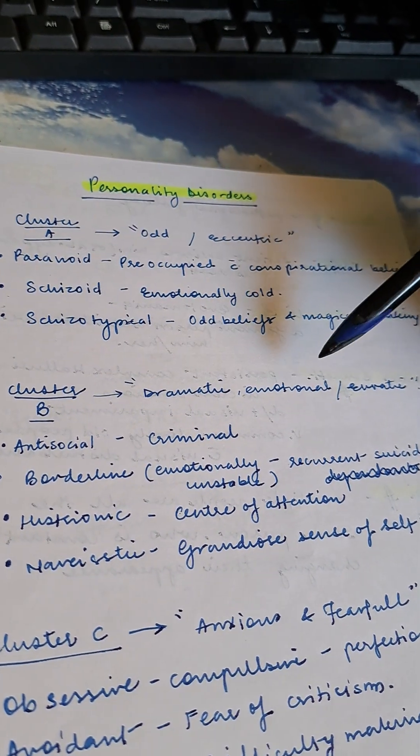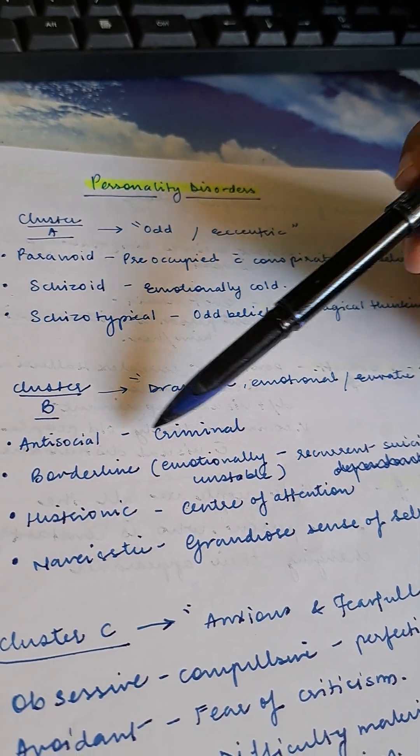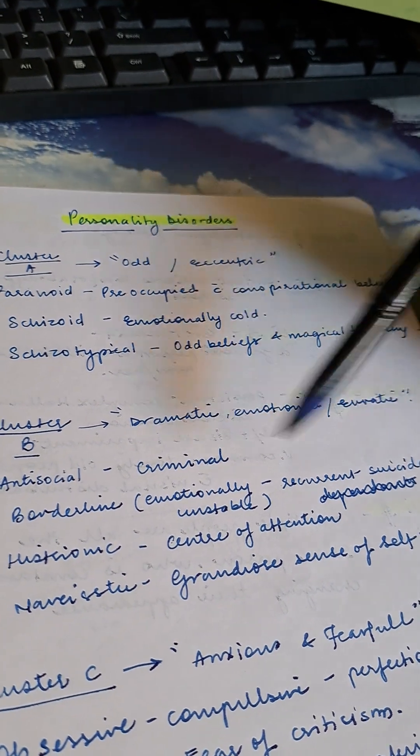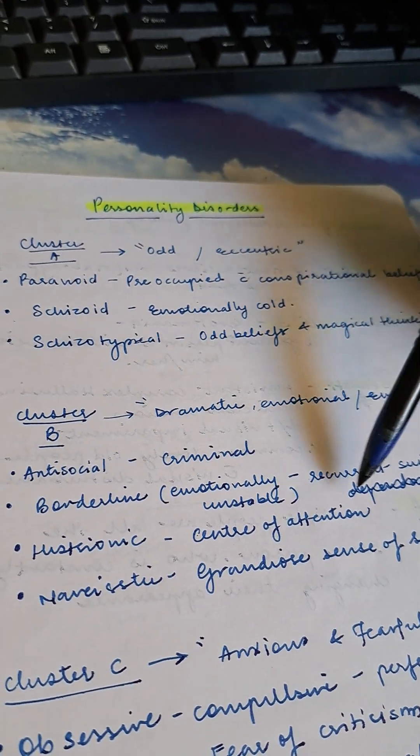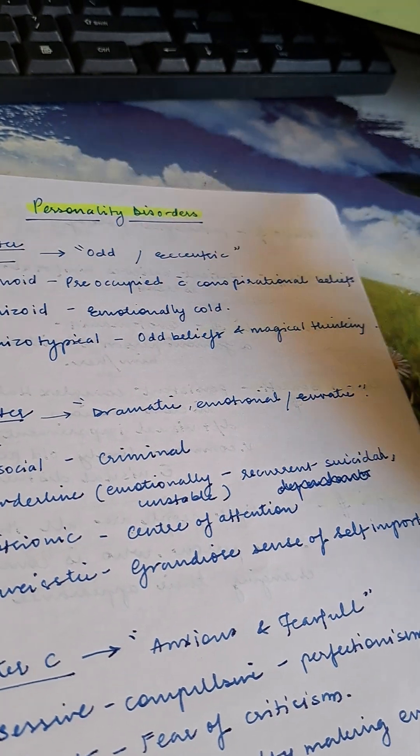Cluster B - dramatic, emotional, or erratic: antisocial have criminal behavior, borderline are emotionally unstable with recurrent suicidal behavior, histrionic seek center of attention, narcissistic have grandiose sense of self-importance.